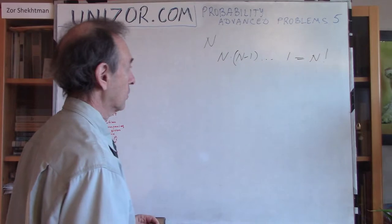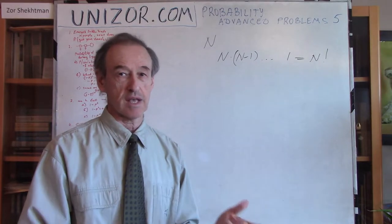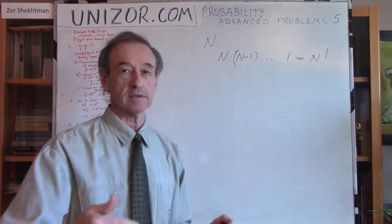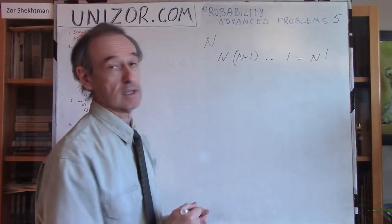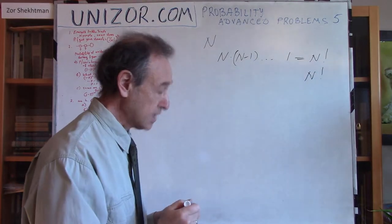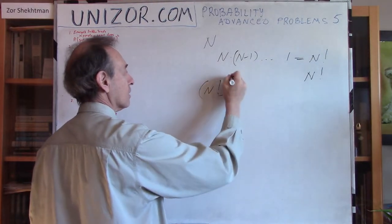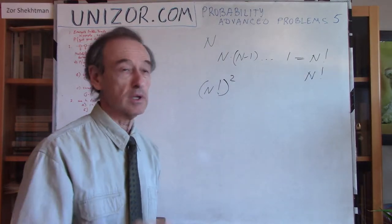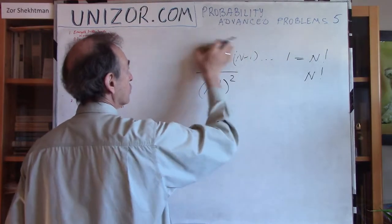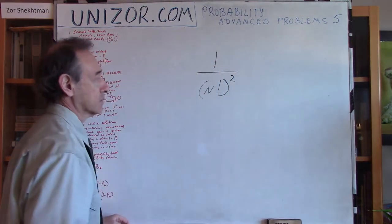Now let's talk about the right shoes. Right shoes also present exactly the same kind of problem — we have to put all the right shoes in the proper order so everyone gets their own shoes. That's another N factorial variations. With each of those combined, the total number of different variations is N factorial squared, and the probability of everyone getting the right shoes is 1 over N factorial squared.